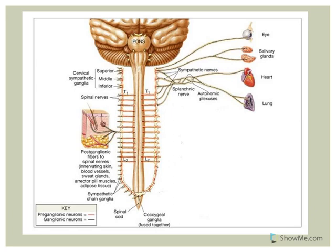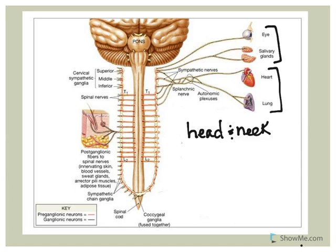The target structures are visceral effectors in your head and neck - so smooth muscle or glands, such as smooth muscle associated with the eye and salivary glands. You also have target structures in the thoracic cavity, for example the heart and the lungs.